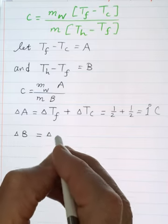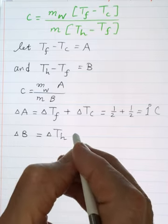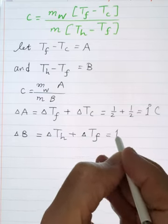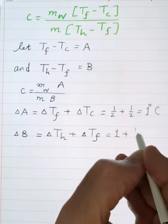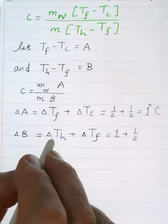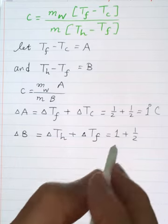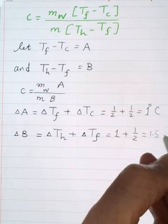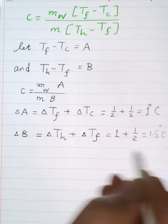How about the error of B? Error of T_hot plus error of T_final. That means one plus half, because the error of the T_hot we measure it with a different thermometer. The error is one, so it is 1.5 degree Celsius.